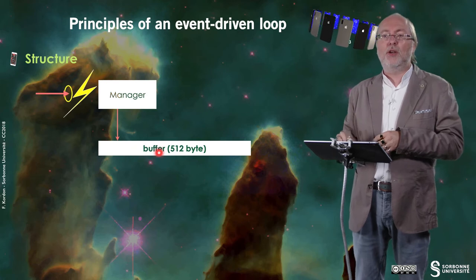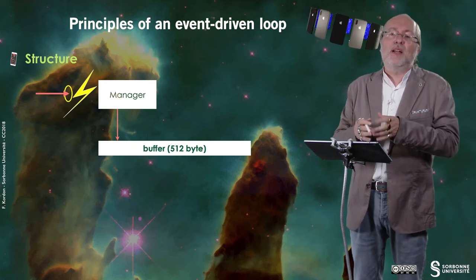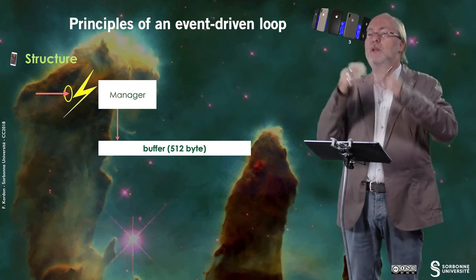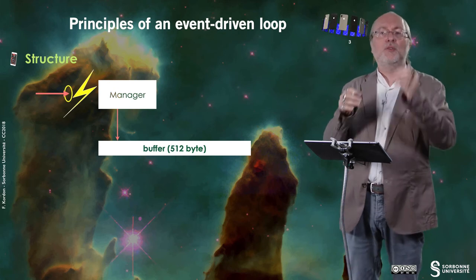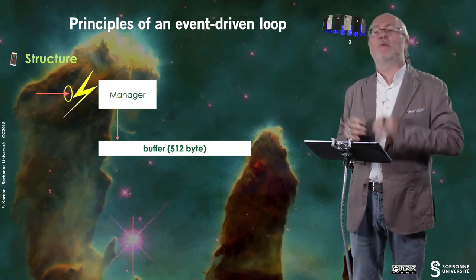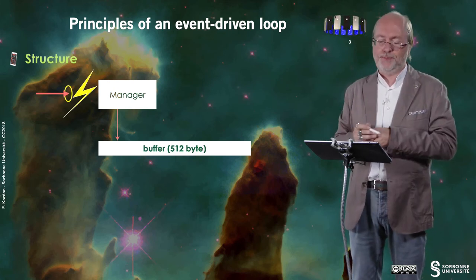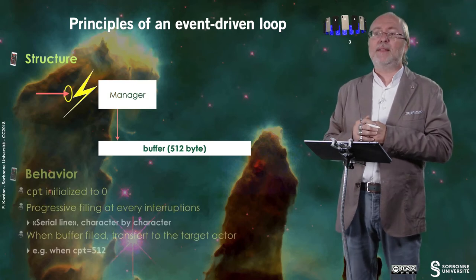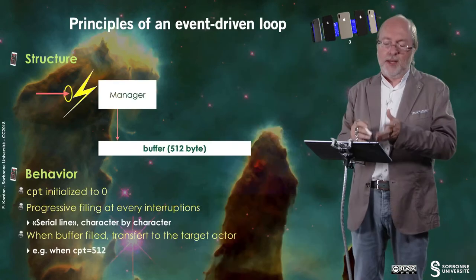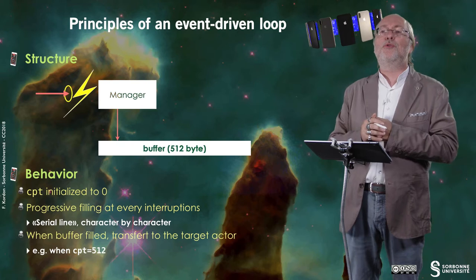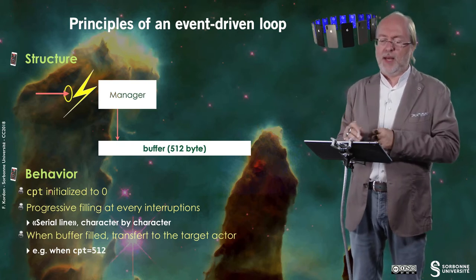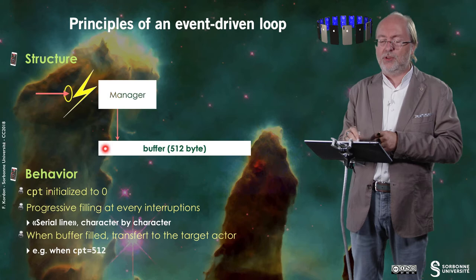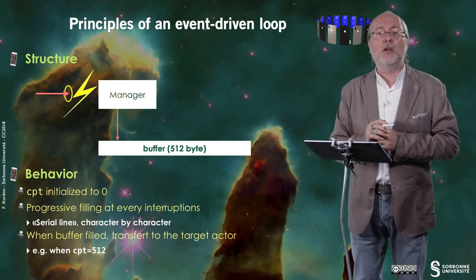For example, the manager fills a buffer with the number of characters, or in the serial line, it was one character by one character that it received. The behavior is typical. Here I focus on this idea of a serial line, so it's character by character — I receive a character.